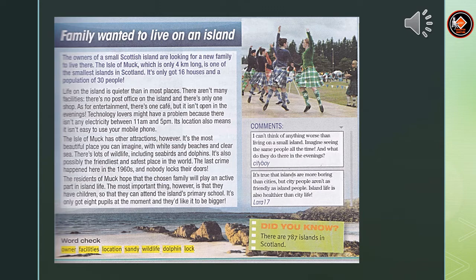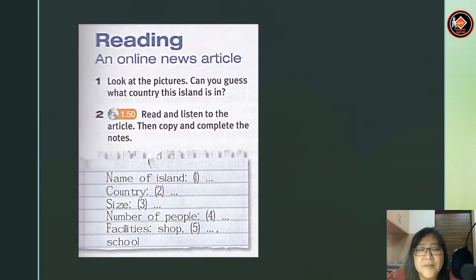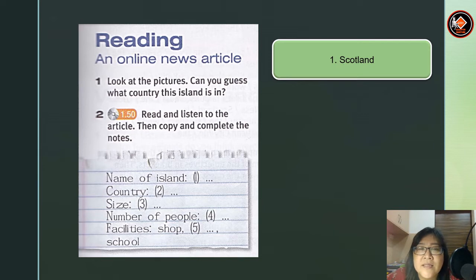Did you know? There are 787 islands in Scotland. Students, look at the pictures on the previous slide. Can you guess what country this island is in? The answer is Scotland.